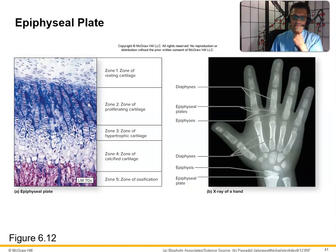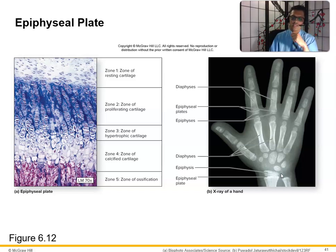Looking at an x-ray of a child, you can identify the five zones and the growth plates, which are visible because the bones haven't fully developed. In an adult, the growth plates are no longer visible — you'll just see lines. The diaphysis is the shaft, and the epiphyses are the ends.